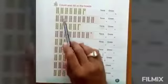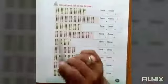In this chapter, first question is count and fill in the blocks. We have to count the dot of each box and write in the given space.